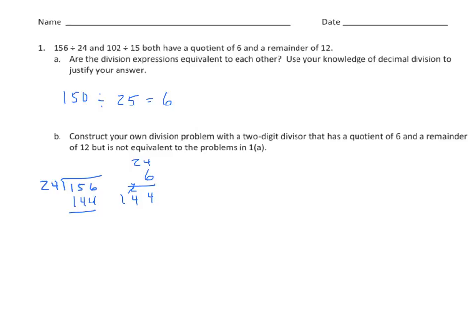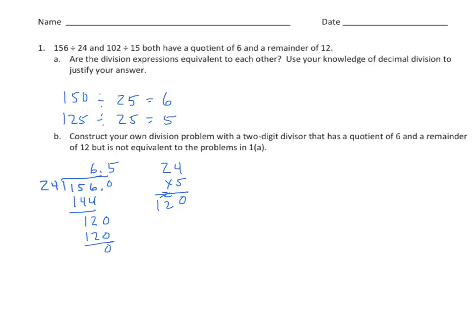Let's record that quotient. Now we're going to put in a decimal and do some subtracting. We subtract and get 12. We're going to exchange those 12 ones for 120 tenths. I'm going to think quarters again — 25, and 120 is close to 125, and that would be 5. We'll multiply our estimate of 5 times the divisor of 24. We record our quotient — we have 6 and 5 tenths.